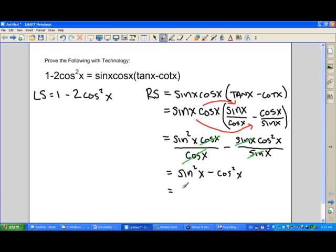So I'm left with sine squared x minus cos squared x. Using the Pythagorean identity, sine squared x becomes one minus cos squared x. And then I can group my like terms together. I have two cos squared x terms.